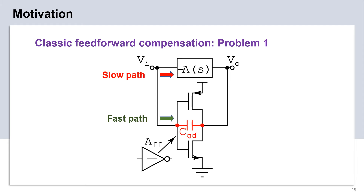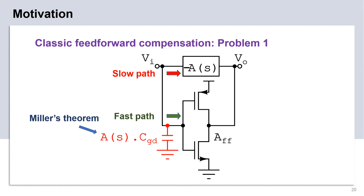This slide shows the transistor-level implementation of the fast path inverter. Please note that the parasitic gate-to-drain capacitor CGD of the inverter appears directly across the slow path. By invoking Miller's theorem, the CGD capacitor can be referred to the VI node after multiplication with the slow path gain A. Now we require large gain from the slow path. However, a large gain from the slow path will simply translate to large Miller capacitance at the VI node. This problem is further worsened because the UGB of this amplifier is set by the fast path. Thus, for larger UGB, we must increase the size of the inverter A, which increases the capacitor CGD. This limits the bandwidth of a classical feed-forward architecture.